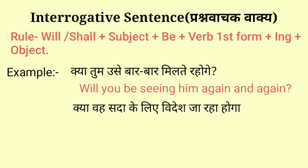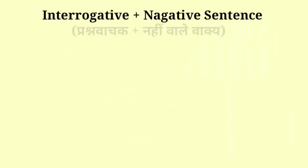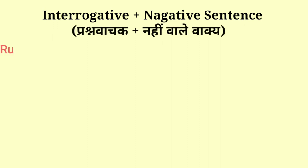For example: 'Kya vah sada ke liye videsh ja raha hoga?' — Will he be going abroad forever? Is vaakya mein 'will be' hamaari helping verb hai, 'he' arthat 'vah' subject hai, 'going' arthat 'ja' verb ki first form + ing hai, aur baaki hamaara object hai.